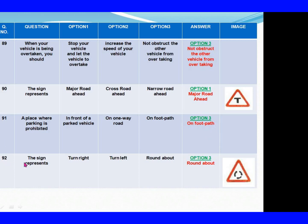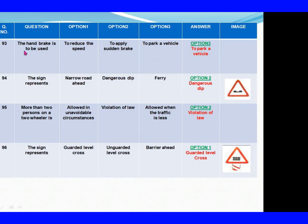Question 92: The sign represents. Option 1: Turn right. Option 2: Turn left. Option 3: Roundabout. The right answer is Option 3: Roundabout. Question 93: The hand brake is to be used. Option 1: To reduce the speed. Option 2: To apply sudden brake. Option 3: To park a vehicle. The right answer is Option 3: To park a vehicle.